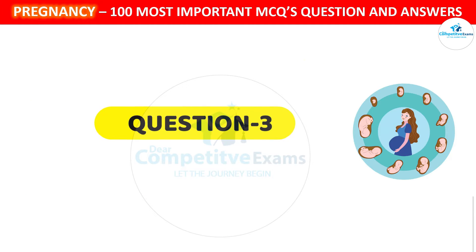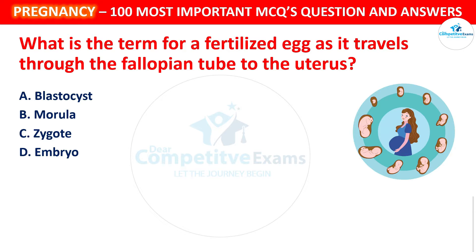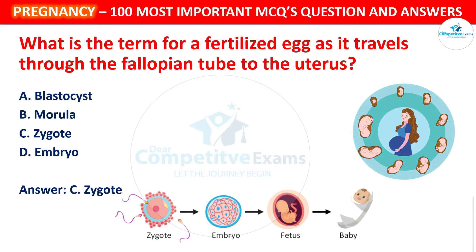Question number three: What is the term for a fertilized egg as it travels through the fallopian tube to the uterus? Your options: Blastocyst, Morula, Zygote, or Embryo. The correct answer is Zygote. The term for a fertilized egg traveling through the fallopian tube is zygote. It becomes a blastocyst upon reaching the uterus.